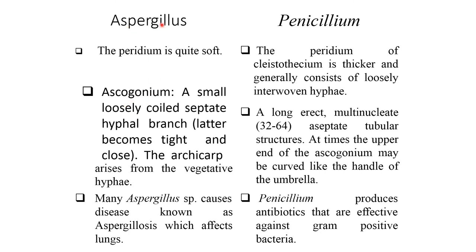The ascogonium of Aspergillus is a small, loosely coiled, septate hyphal branch that later becomes tight and closed. The archicarp arises from the vegetative hyphae. Whereas in Penicillium, it is a long, erect, multi-nucleated aseptate tubular structure.